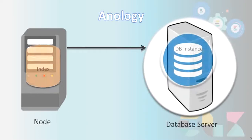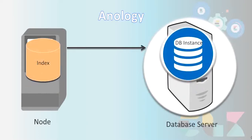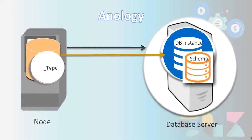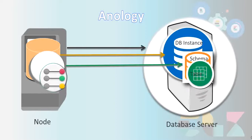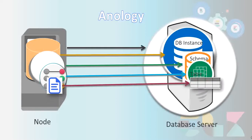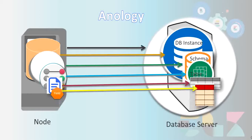The index in Elasticsearch corresponds to a database instance. The type within the index is equivalent to the database schema where we store the data. The mapping in Elasticsearch is equivalent to a table in the relational database. A document is equivalent to a row in the table. The fields in a document correspond to the columns in the table. This is the analogy between Elasticsearch and the relational database.